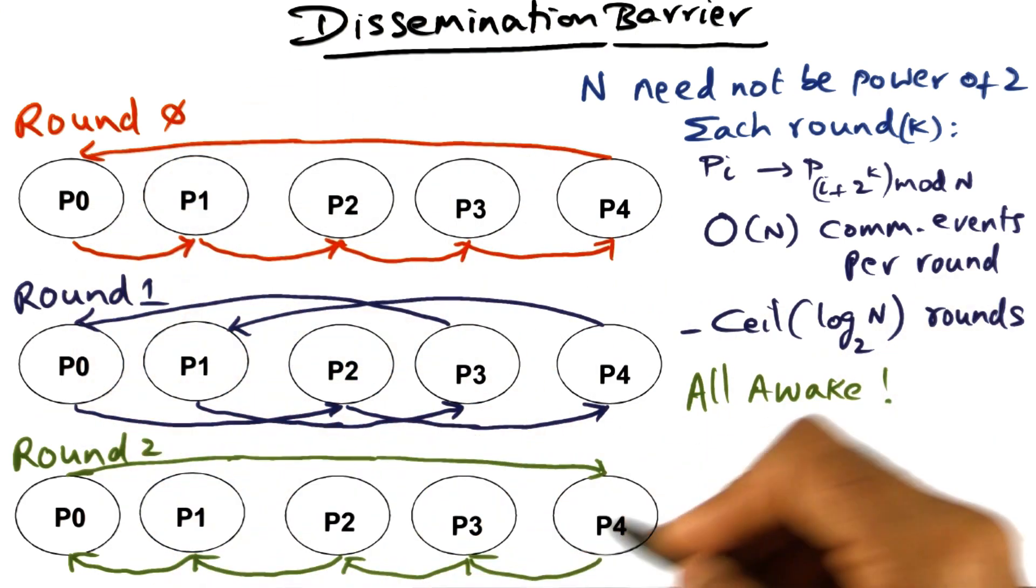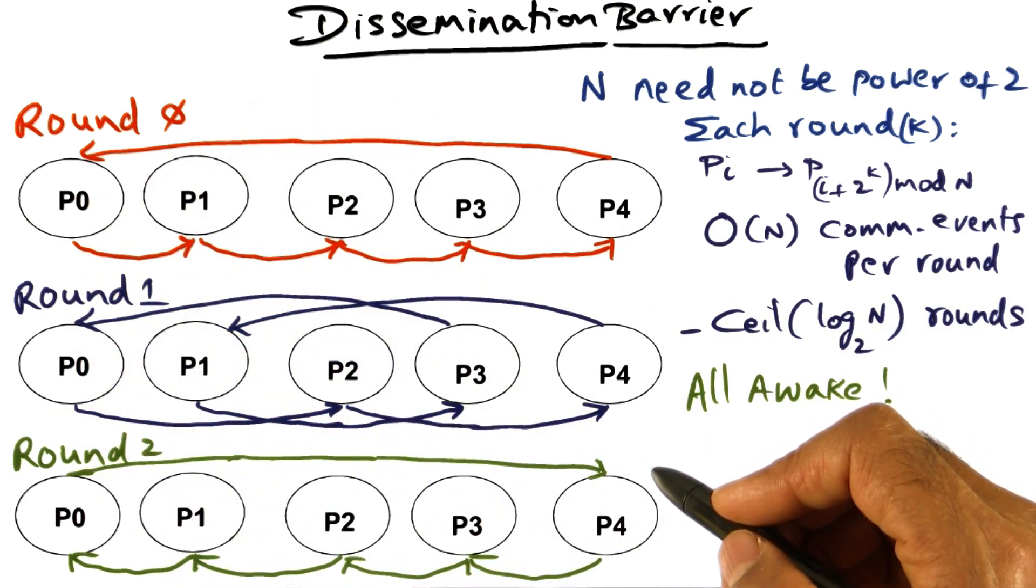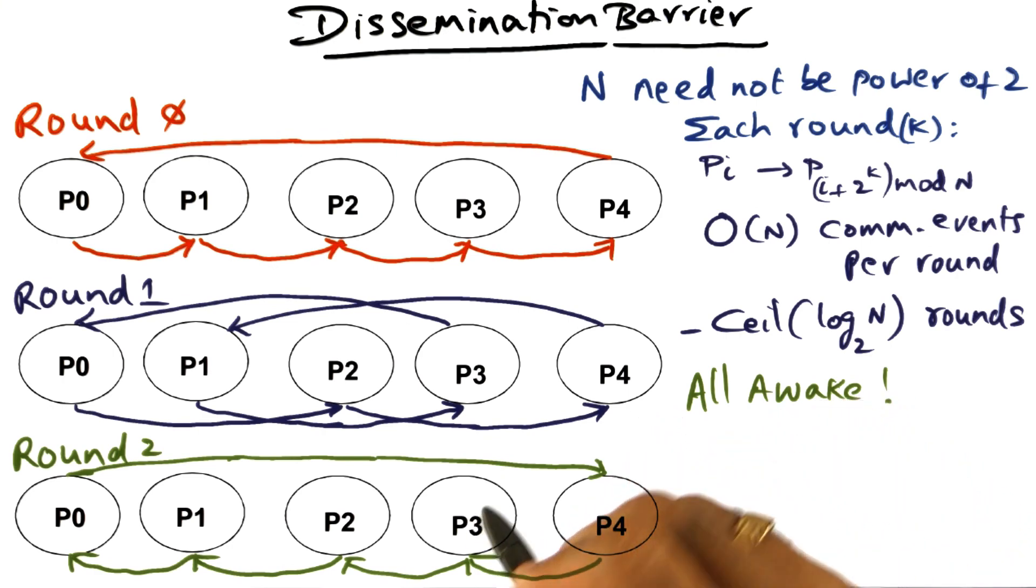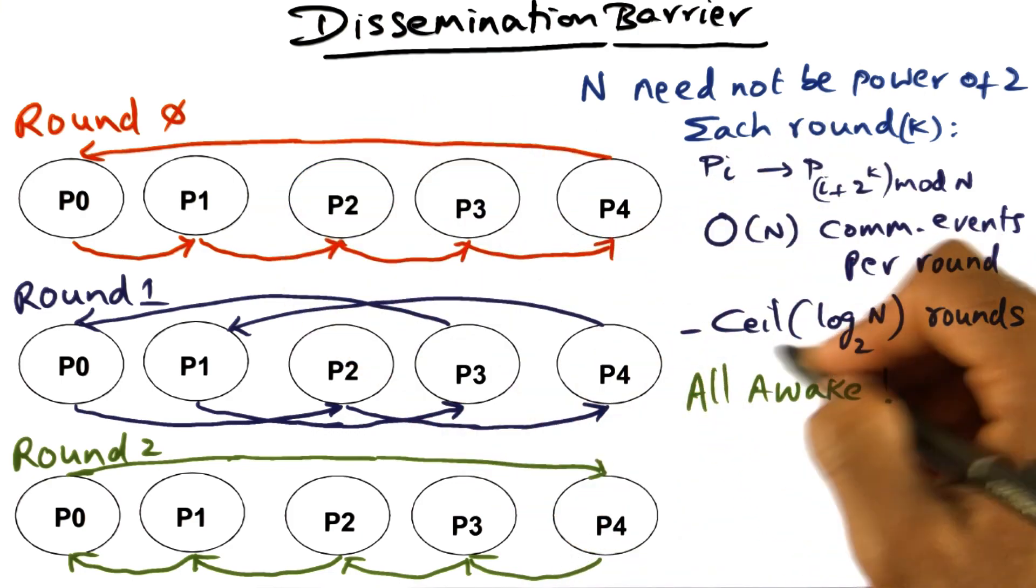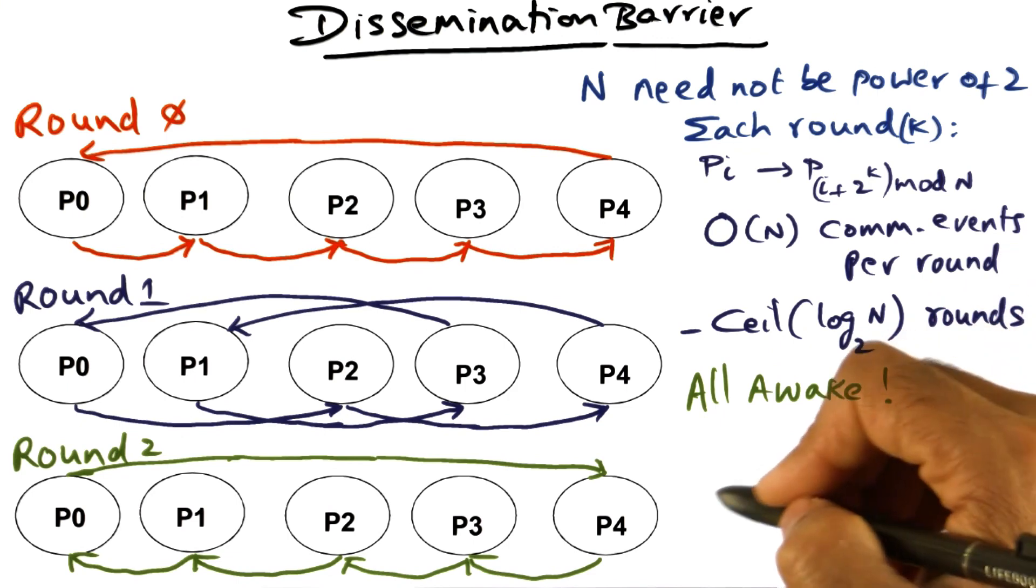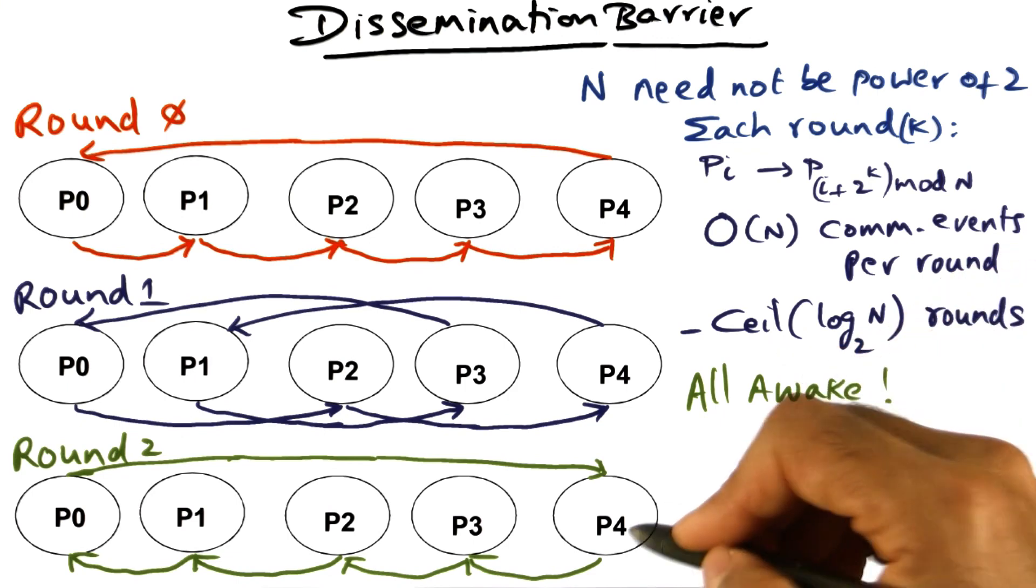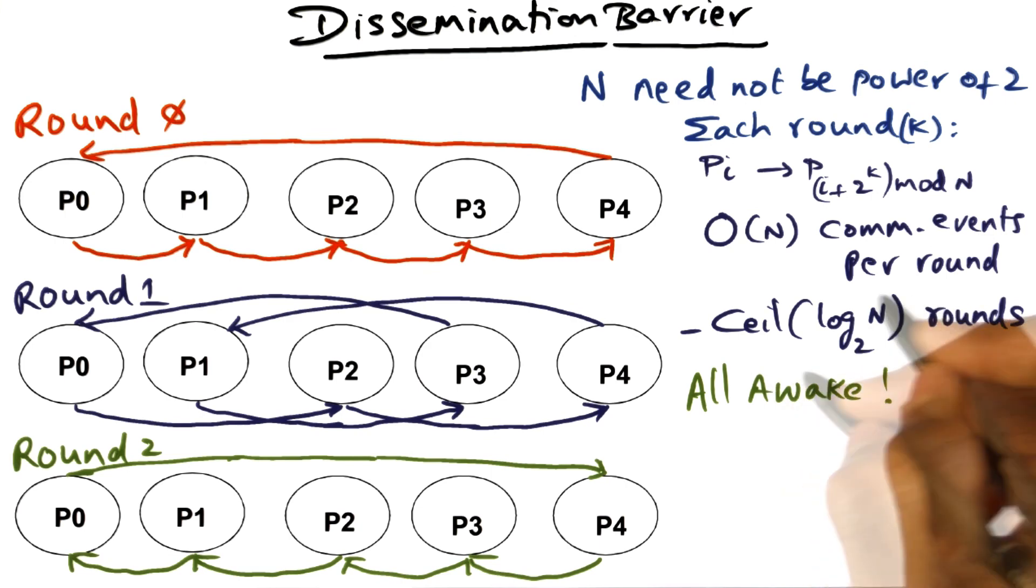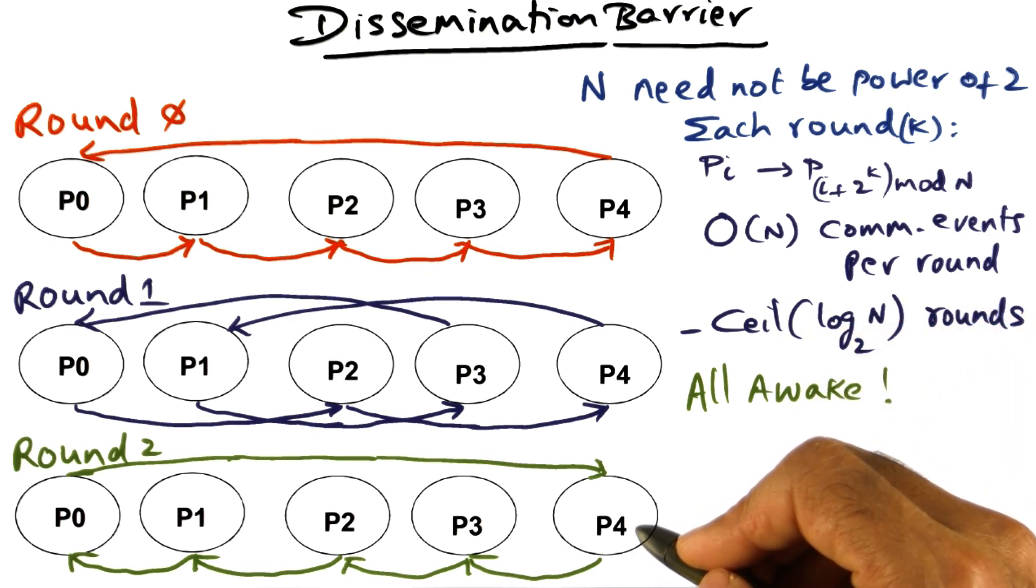So overall, during the entire dissemination barrier information diffusion, every processor is receiving a total of ceiling of log n to the base two messages. Every round one message, and there are ceiling of log n rounds, so ceiling of log n to the base two is the number of messages that any given processor is receiving. Once every processor has received this ceiling log n to the base two number of messages, it knows that barrier is complete. It can move on.